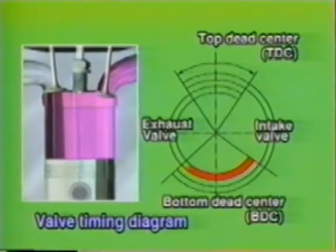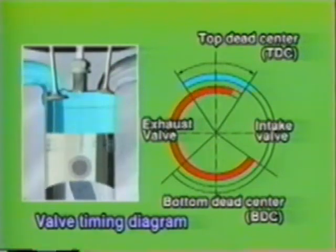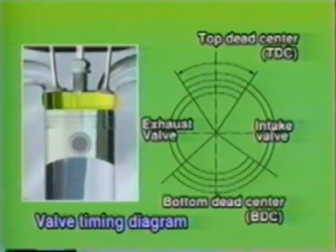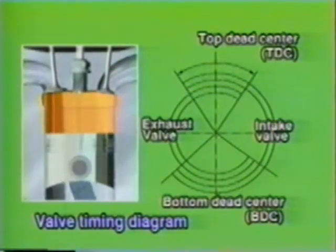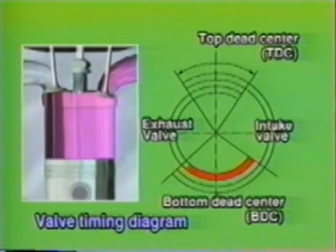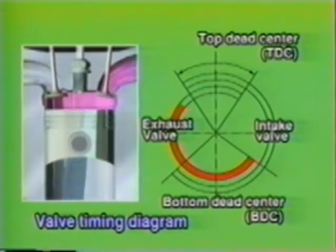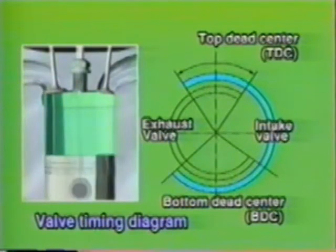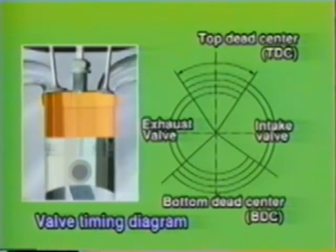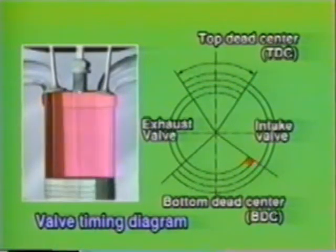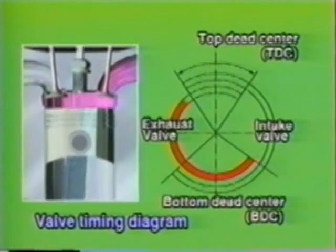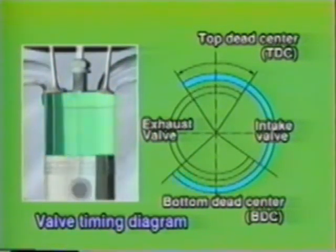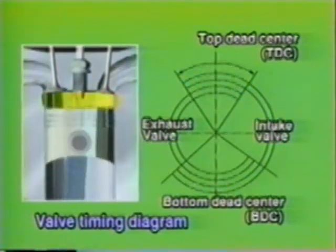A chart showing valve operation timing in terms of crankshaft angle is called a valve timing diagram. As this diagram shows, each valve is opened or closed earlier with respect to the piston position in each stroke, thereby improving the intake and exhaust efficiencies as well as enabling each valve to be fully open at the optimum time.